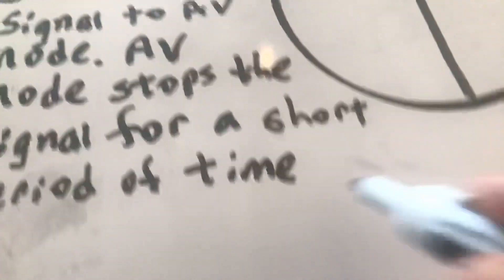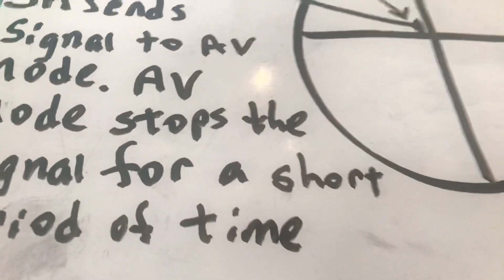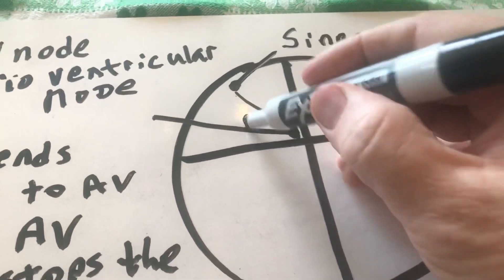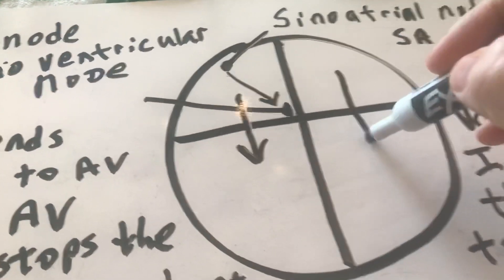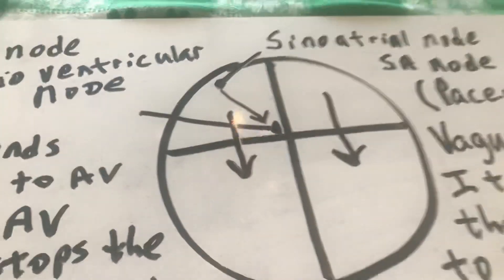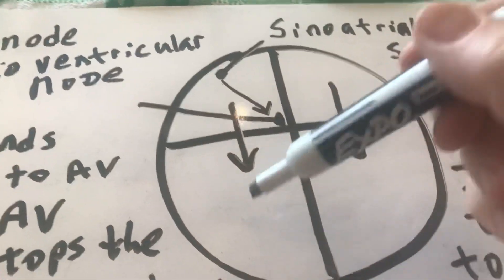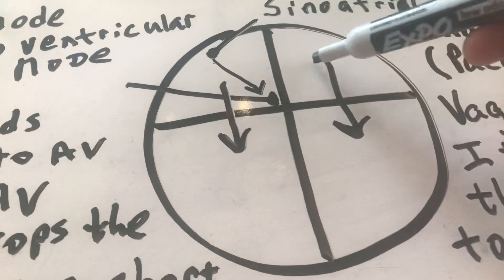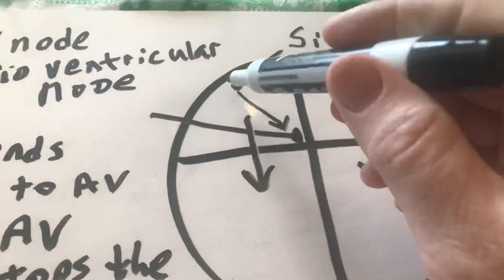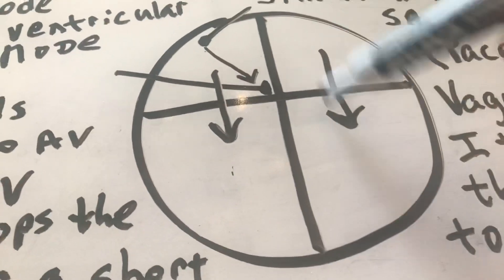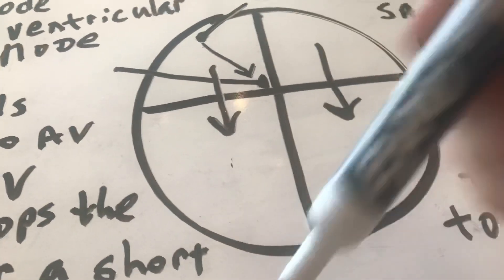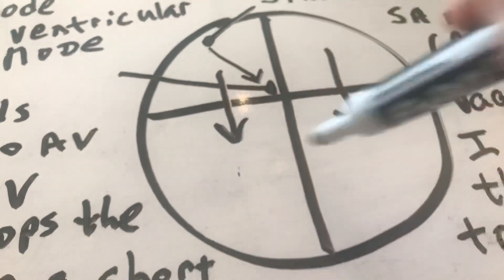And the reason it does this is so that the atria can contract, because remember the blood has to come from the atria into the ventricles. If the ventricles are contracted at the same time as the atria, then the blood's going to have nowhere to go. But when these contract it forces the blood down into the ventricles. Now once the blood's in the ventricles it has to be pumped to either the lungs or out to the body.